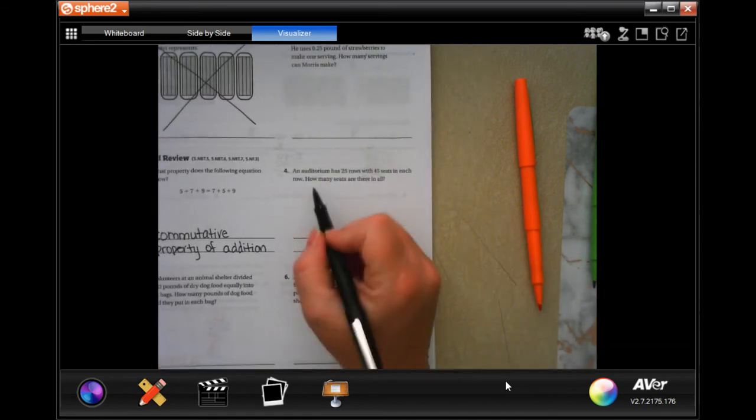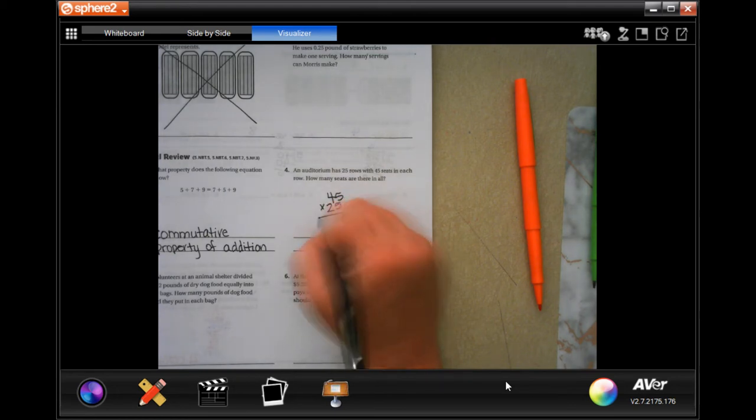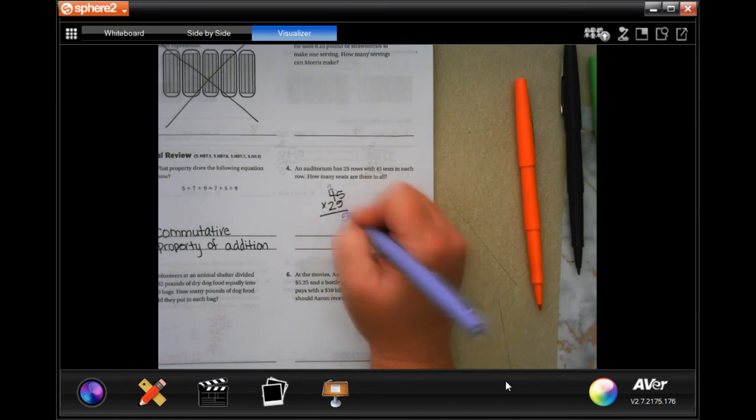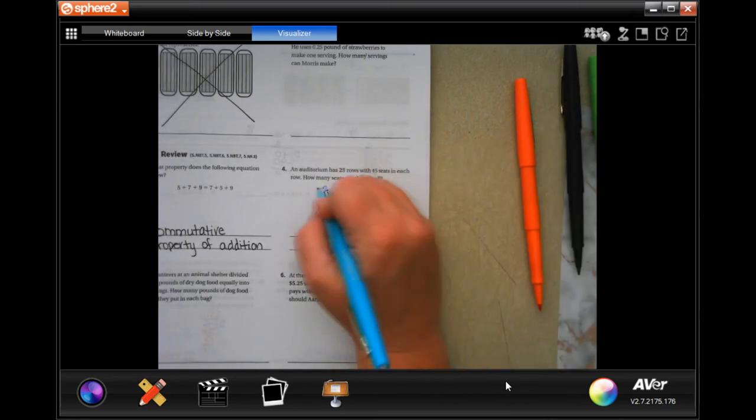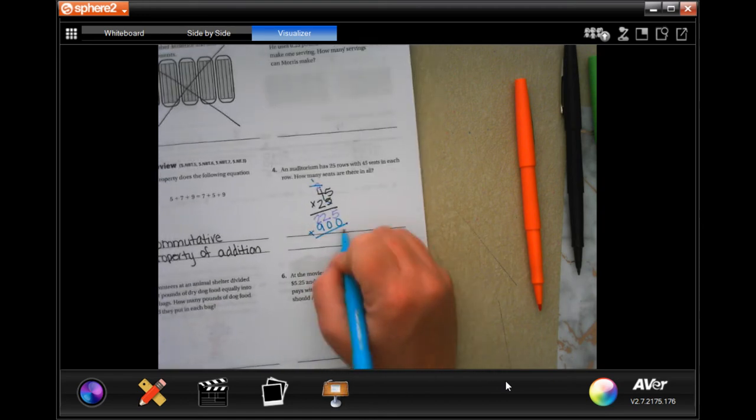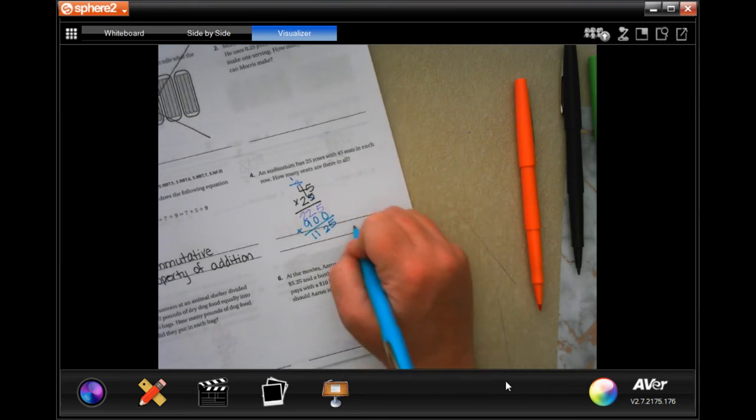All right, an auditorium has 25 rows with 45 seats in each row. How many seats are there in all? Well, I'm going to put 45 and multiply that by the 25 and see what I get. Five times five is 25, carry that two. Five times four is 20 plus two more is 22. Now I'm going to tic-tac-toe. Two times five is 10, carry the one. Two times four is eight plus one is nine. So add those up, I'm going to get 1,125 seats.